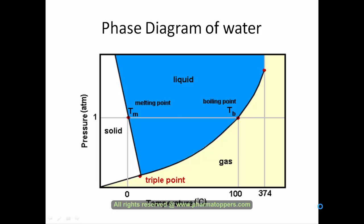As you can see here, at constant pressure — suppose this is the line of constant pressure — if we continuously increase the temperature from minus to zero degrees Celsius, at a certain point it will cross zero degrees Celsius. At this pressure of one atmosphere, which is the normal atmospheric pressure, when the temperature increases above zero degrees Celsius, the solid material converts to liquid, here in the case of water.